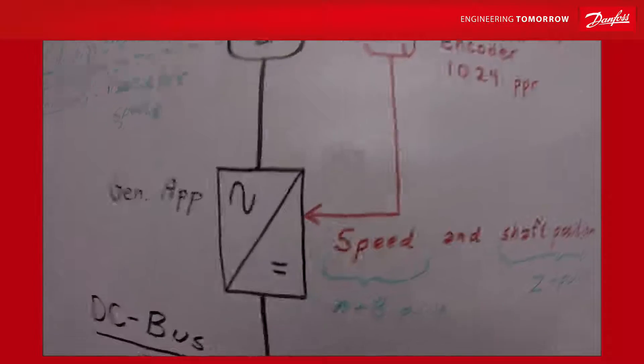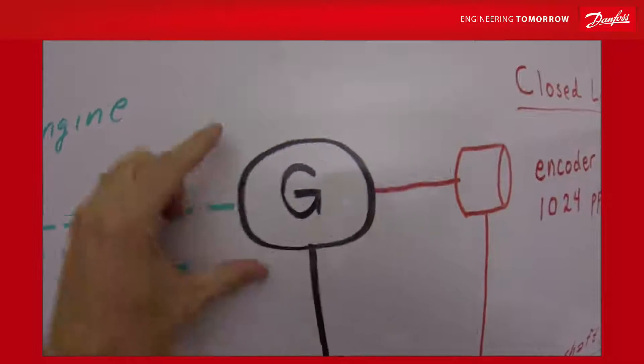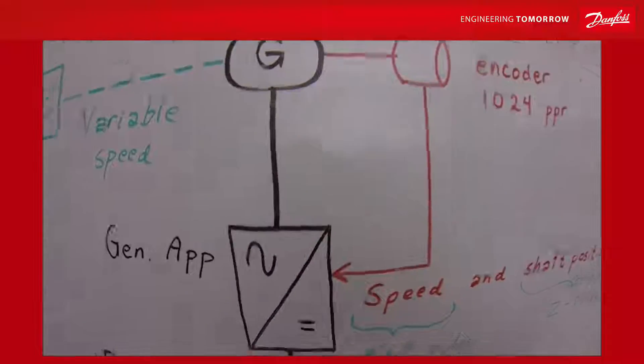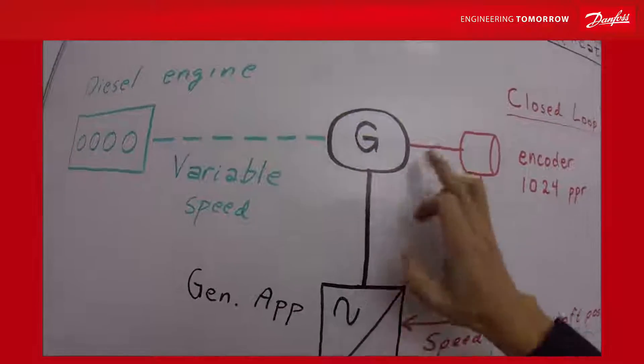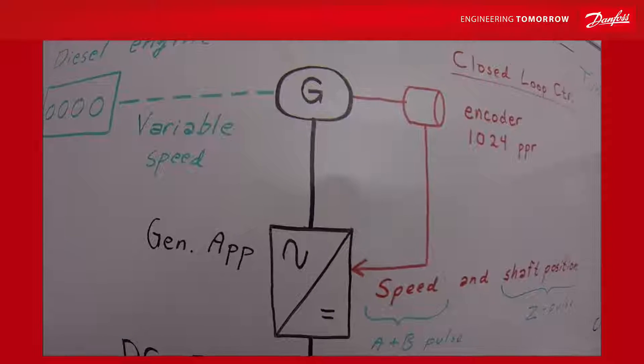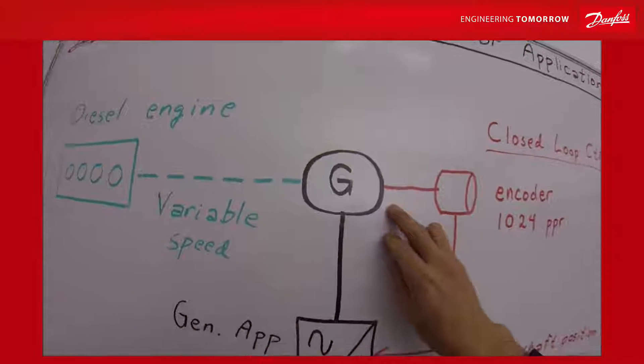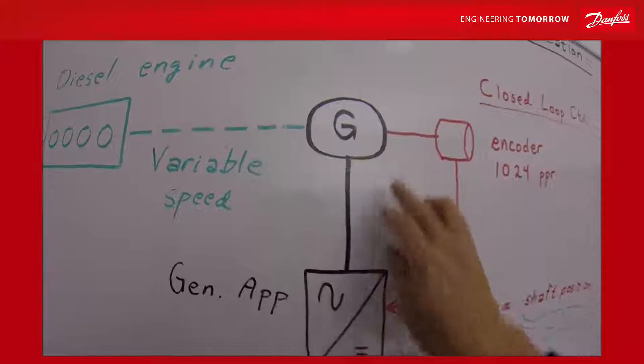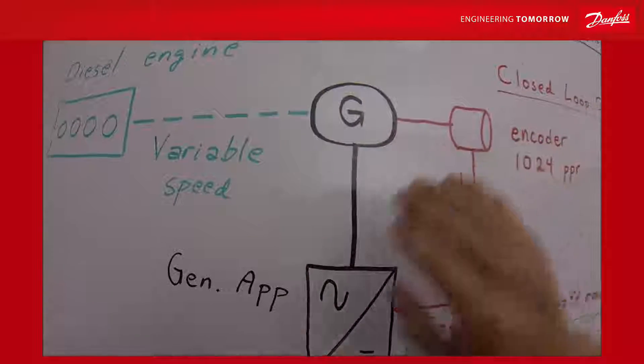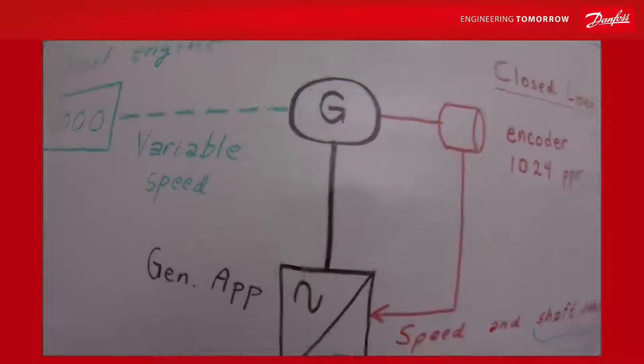For our drive this means that the drive needs to control the generator in a closed loop motor control. To handle the generator like motor control, the drive needs precise information about the motor characteristics. This means the motor nominals but also identification runs to identify the back EMF curves and the impedance of the motor.